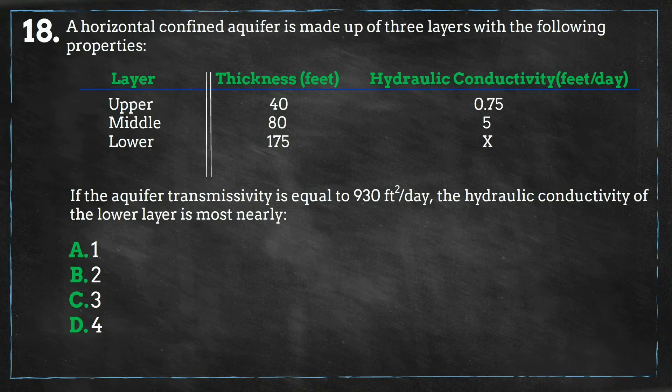So, if the transmissivity of one layer is the product of the hydraulic conductivity and the layer thickness, the aquifer transmissivity is the sum of the transmissivities of the three layers comprising the aquifer.